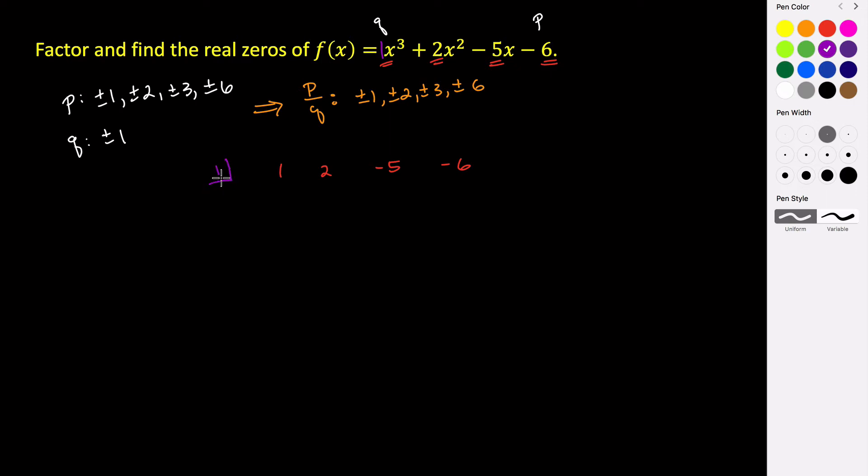You just start going through potential factors and use synthetic division. I'm going to start with positive one which means that potentially x minus one would be a factor. So we bring down the one. One times one is one. And then we add two plus one is three. Three times one is three. Negative five plus three is negative two. Two times one is two. And then negative six plus two is negative four. Now because we were left with a value here that was not zero, that means that x minus one is not a factor.